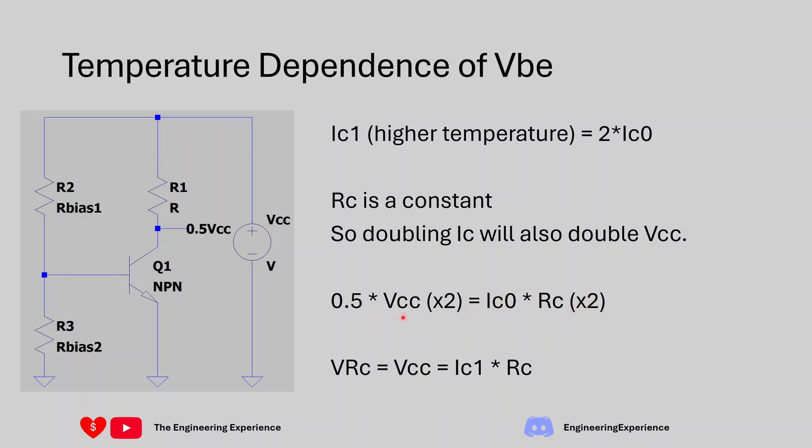So the collector current means that our voltage drop across the resistor will also go double. And that means initially we had 50% of the power supply across this resistor over here. But if you multiply by 2 we're basically going to get 100% of the voltage drop across this resistor. That means that the voltage drop across the transistor is 0 and that the transistor is fully saturated. So this circuit cannot increase the collector current anymore because there's no room as the resistor is fully maxed out to the power supply and the transistor voltage drop cannot go any lower.